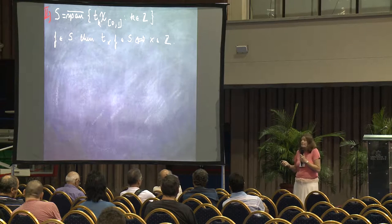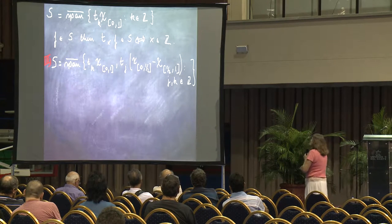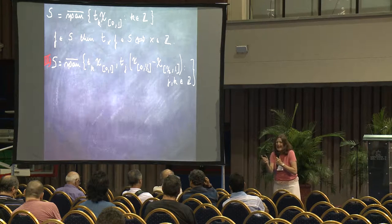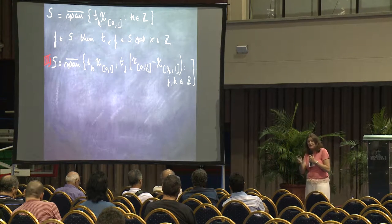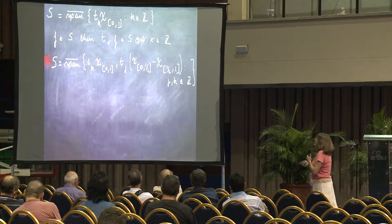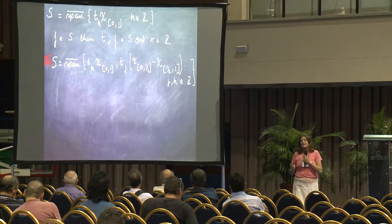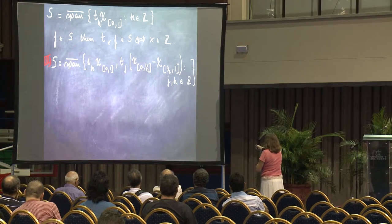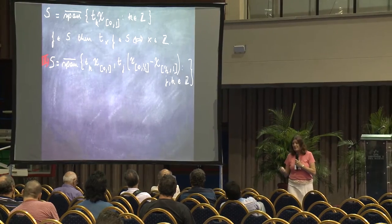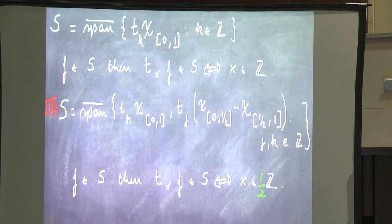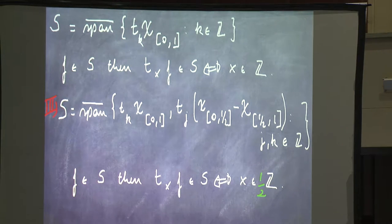Now I take that space and ask: what if I want to add a little bit of extra invariance? That means the functions in this space are also invariant by another translation — not only the integers. The other translation I introduce is translation by 1/2, because I add a function which is a shift of the Haar function. You can prove that the translate of any f in S is still in S if and only if x is in (1/2)ℤ.